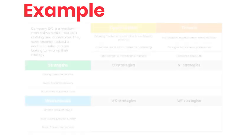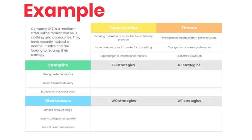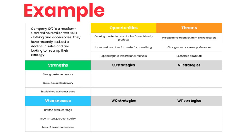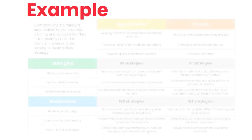Here's an example. Company XYZ is a medium-sized online retailer that sells clothing and accessories. They have recently noticed a decline in sales and are looking to revamp their strategy. Here's an example of a TOWS analysis that they could use. Threats: increased competition from other online retailers, changes in consumer preferences, economic downturn. Opportunities: growing market for sustainable and eco-friendly products, increased use of social media for advertising, expanding into international markets. Weaknesses: limited product range, inconsistent product quality, lack of brand awareness. Strengths: strong customer service, quick and reliable delivery, established customer base. Based on the SWOT analysis, company XYZ could use the following strategies.